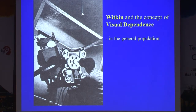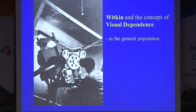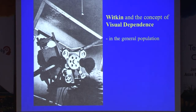Witkin developed the concept of visual dependency, which he examined in the normal population — mostly university students. He was doing experiments to see how people use gravity, inertial cues, vestibular information, proprioceptive information, and tactile information in contraposition to visual information to organize spatial orientation. The question was: when I'm tilted, do I know I'm tilted because of my vestibular system or more because of the visual system?